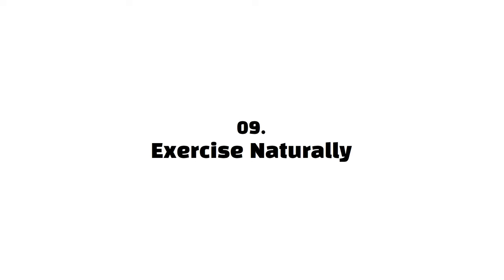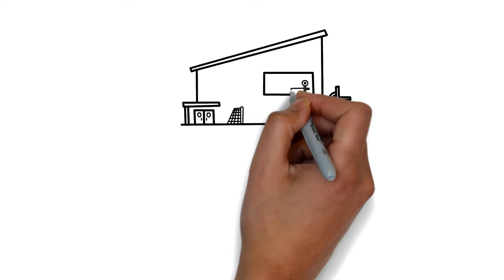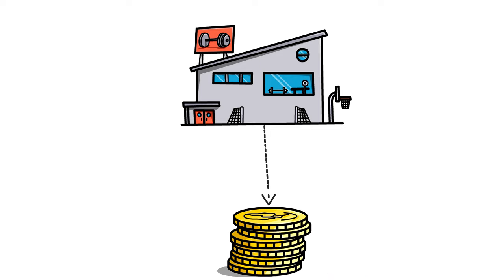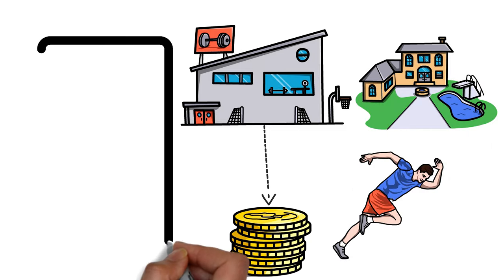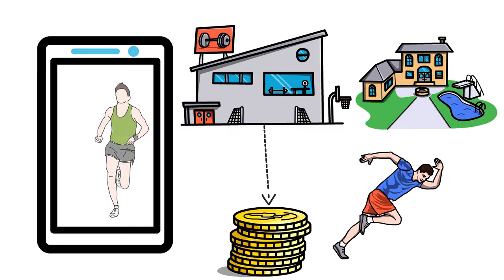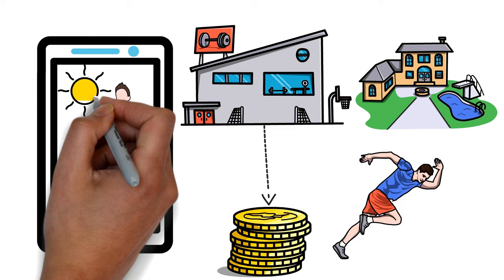Nine, exercise naturally. Gym fees are not for the broke or low income earners. If you must burn those calories, do so at home or use the natural environment around you. You can also get a mat and use a good app to exercise at home or jog in the mornings.